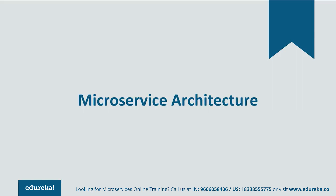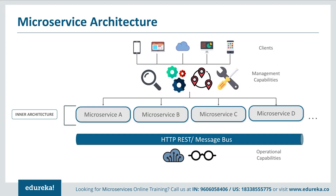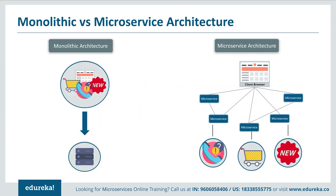Let's look at the different components of the microservice architecture. It starts with different clients from different devices trying to perform different management capabilities such as build, search, and notification. Each functionality is segregated into separate microservices handling their own data — for example, microservice A for search, microservice B for build, microservice C for notifications. All individual microservices have their own load balancing and execution environments. They communicate with each other through REST or message bus to perform operational capabilities such as automation and monitoring. Client requests are passed to the internal architecture through an API gateway.